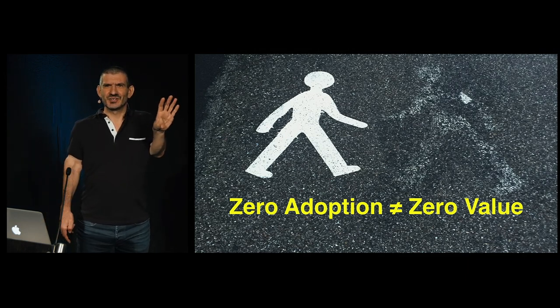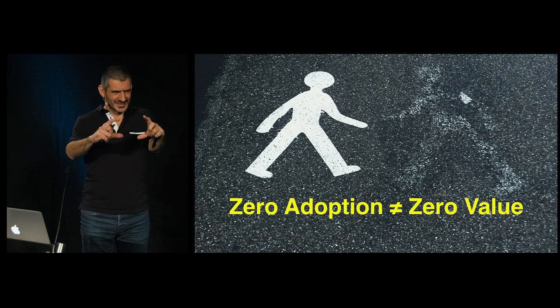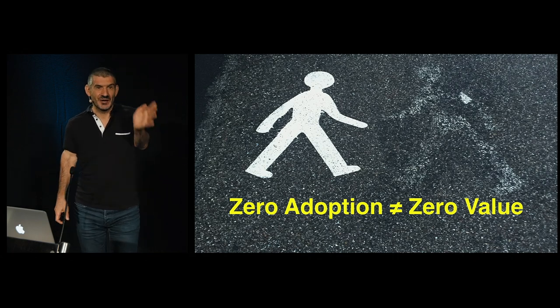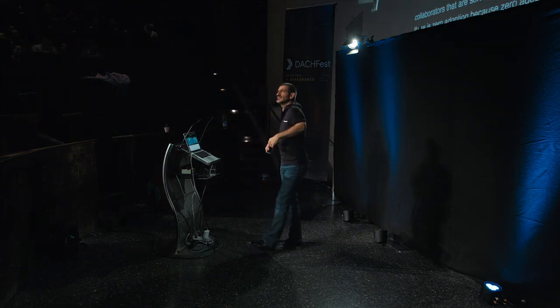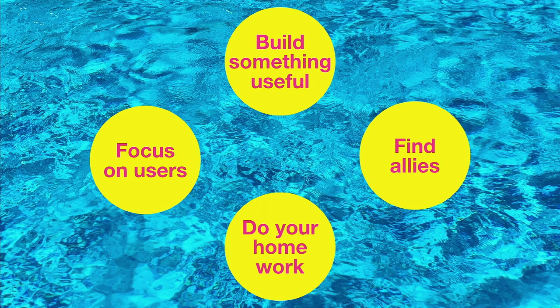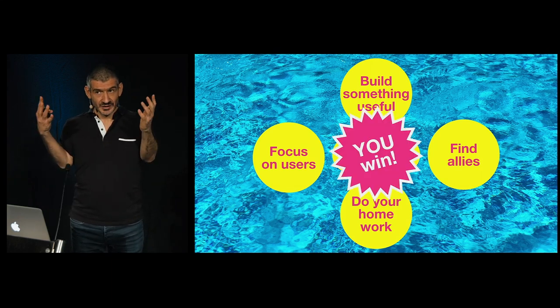This is my interpretation of the Wish You Were Here album cover by Pink Floyd — I was walking around the street, saw it, and said, oh, that looks like that album cover. It stands for the person you wish you had but isn't there — the allies, the users, the collaborators that are sort of missing. Don't beat yourself up if there is zero adoption, because zero adoption doesn't mean zero value. If you do everything right — if you build something useful, if you find allies, if you do your homework writing all the documentation and all the steps you need, if you focus on users — then everybody wins. And if not everybody wins, at least you win, because you will have a tool that helps you as well.